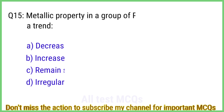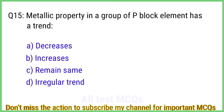Question number 15. Metallic property in a group of P block elements has a trend? The correct answer is option A: Decreases.